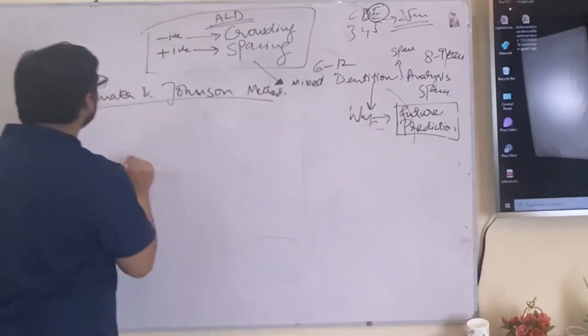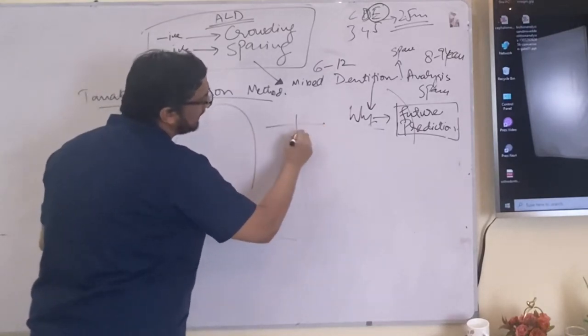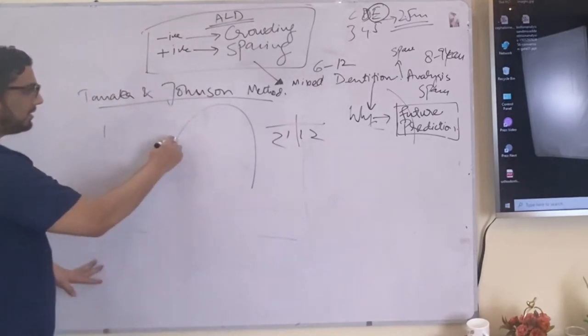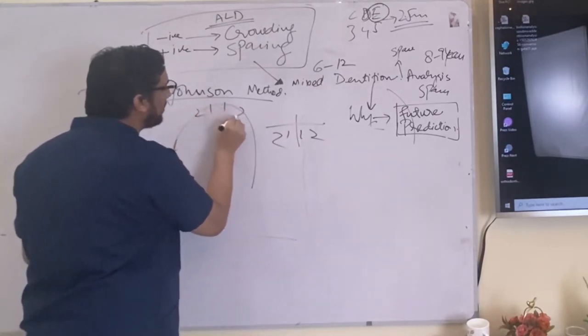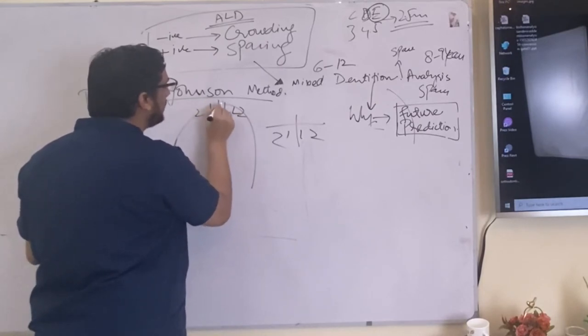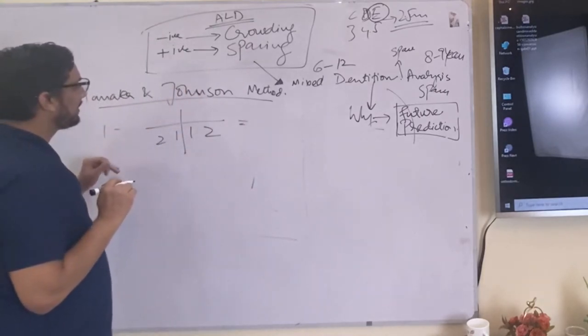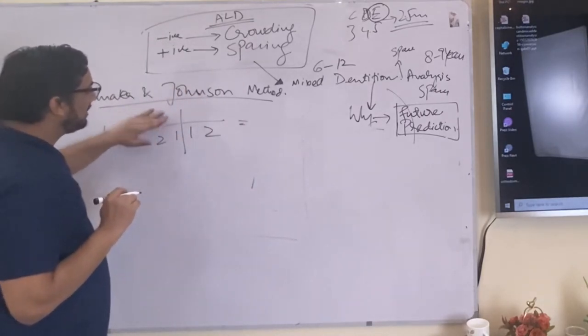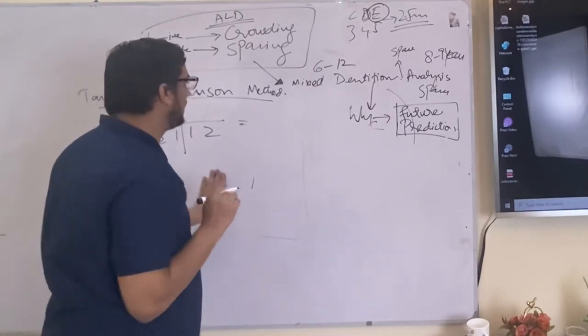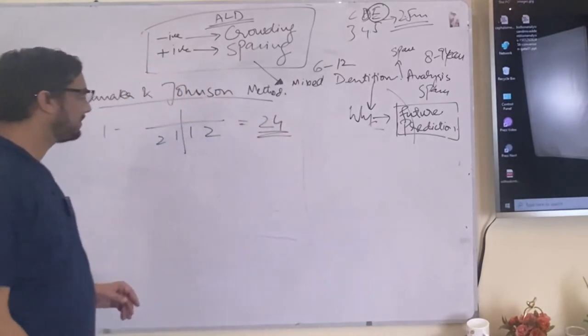First of all we do measure the mesiodistal width of lower incisors and lateral incisors. This is the first step. You measured the mesiodistal width of the lower incisors and lower lateral incisors. The first step is the measurement of the mesiodistal width of the central and lateral incisors. Let's say the value is 24 millimeter just for the sake of it.